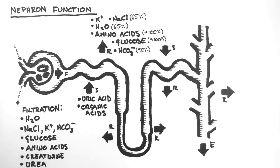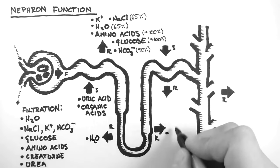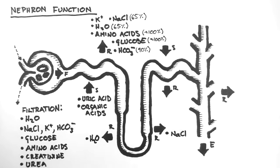Now the loop of Henle is all about concentration of urine. It does this by reabsorbing water in the descending limb, which is highly water permeable. And then reabsorbing 25% of the filtered sodium chloride in the ascending limb. This means that what we are left with is a higher concentration of waste products, such as urea.